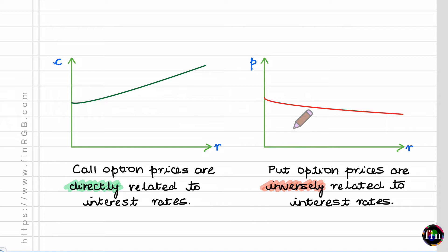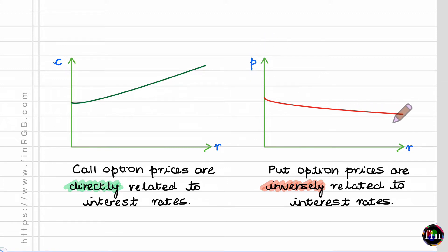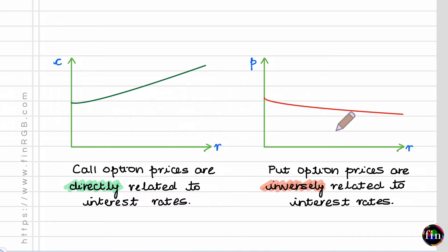Put options show an opposite behavior. Put option prices are inversely related to interest rates. So when R goes up, the premium of a European put starts to come down. This is my final rule of thumb. Now let's spend the remaining part of this video to rationalize this behavior that we are observing for European calls and European puts.